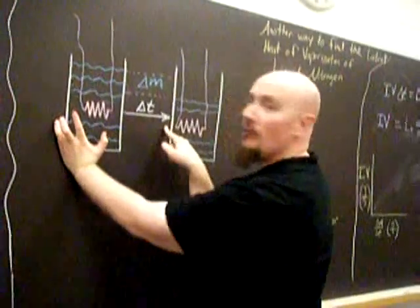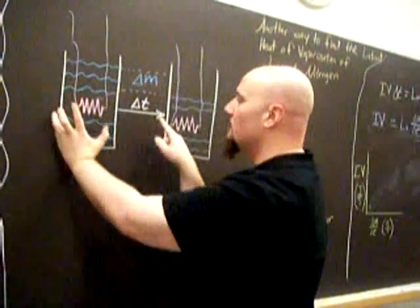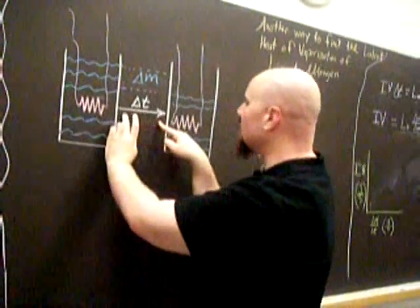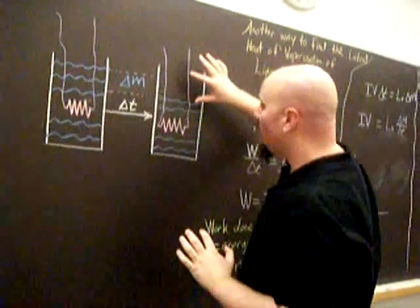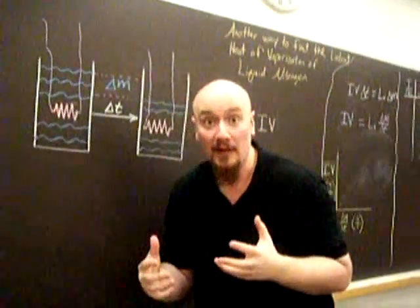And then as the current is going through it, it will produce ohmic heat. And so after some time, a mass of the liquid nitrogen will be evaporated.